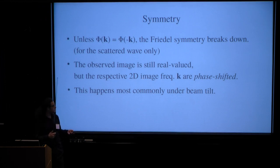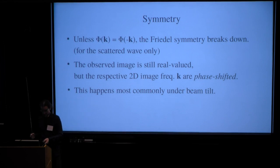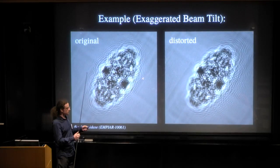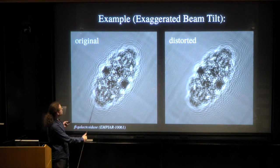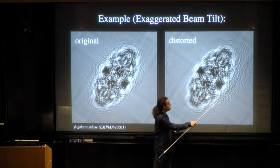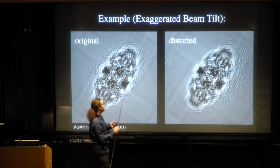This does not make us see imaginary numbers, because the image arises from the interference between the scattered and the unscattered rays. But what it does is it shifts the phases of the respective image waves of frequencies k. And the most common situation we will see this is under a tilted beam. Here's an example. To the left you see a simulated example of beta gal. On the left you see the undistorted image and on the right you see how the very high frequencies are shifted very much to the right, while the lower frequencies remain unimpaired.